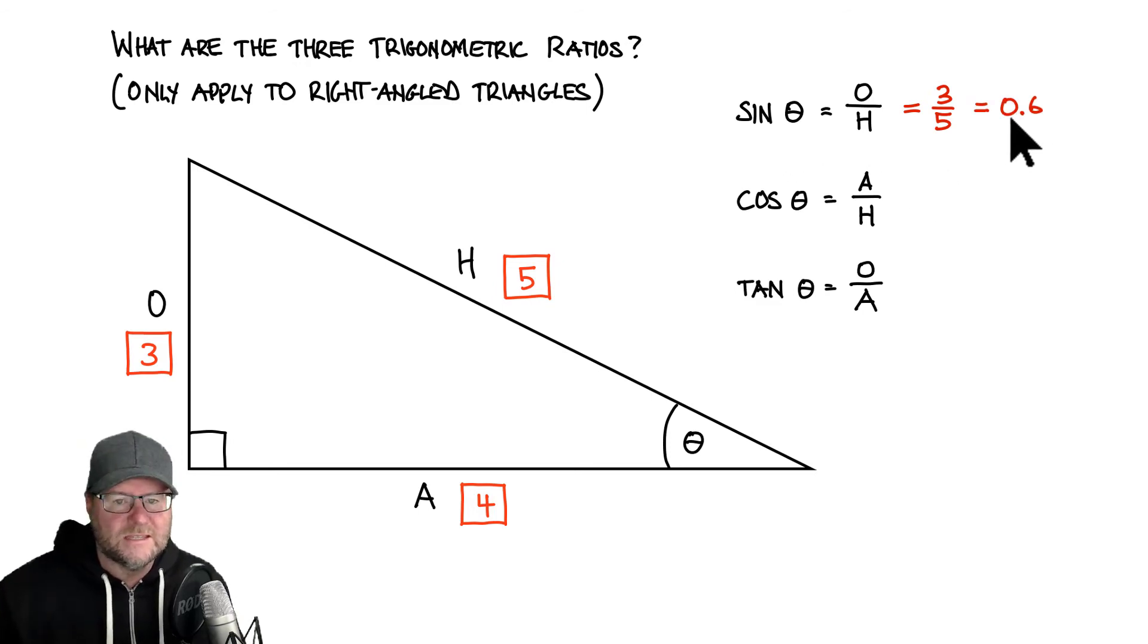So I would say the sine of theta in this case equals 0.6. Let's do the same for cos. So this time we're looking for the adjacent and the hypotenuse. So this will be four over five. Once again, in my calculator, that gives me a number 0.8.